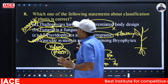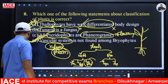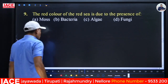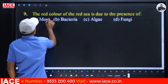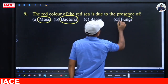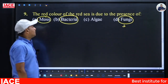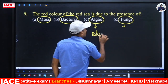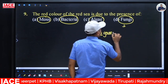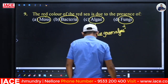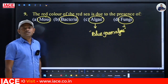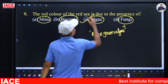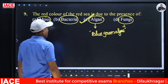Next question: The red color of the Red Sea is due to the presence of — (A) moss, (B) bacteria, (C) algae, (D) fungi. Moss plants are bryophytes; bacteria are not plants; fungi are non-chlorophyllous. The red color of the Red Sea is because of a blue-green algae called Trichodesmium. Presence of this algae gives the red color to the Red Sea. Answer is option C — algae.